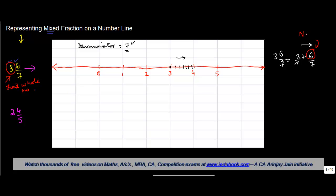The numerator is 6, so out of these 7 parts you have to locate which is the sixth part: 1, 2, 3, 4, 5, 6. This is where the sixth part is.